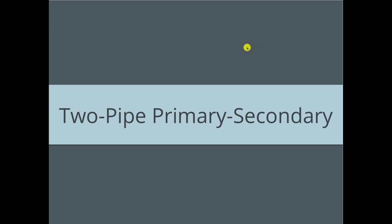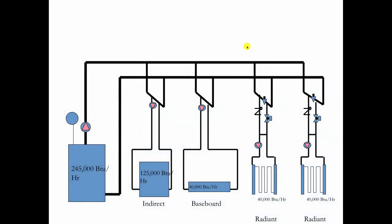Alright, two-pipe system on primary-secondary. Here's one way to do it. Now, the big advantage of primary-secondary is everybody's going to get the same temperature water. So as we leave at 180 degrees on this crossover bridge going into the return, it's 180-degree water, as it is here and here and here.